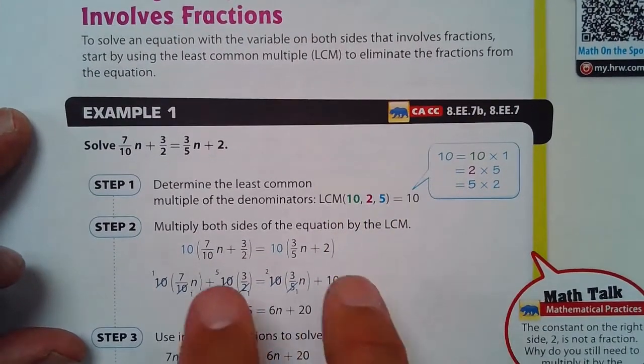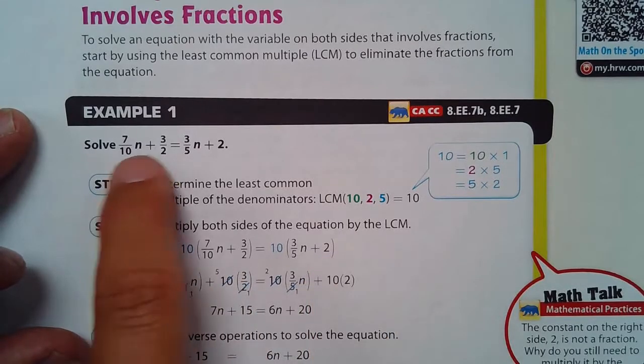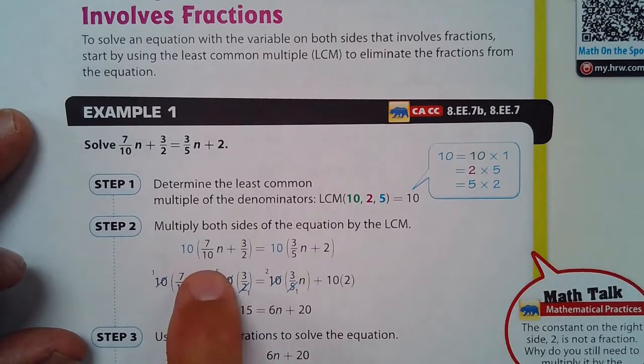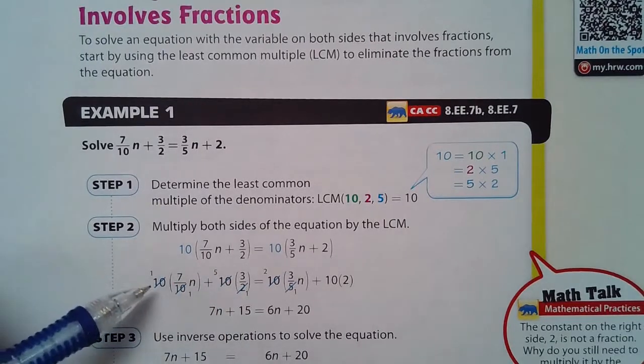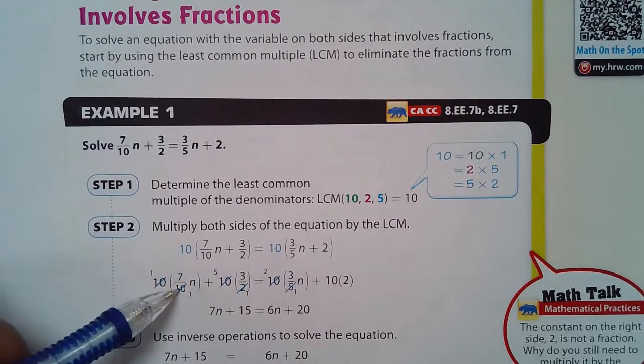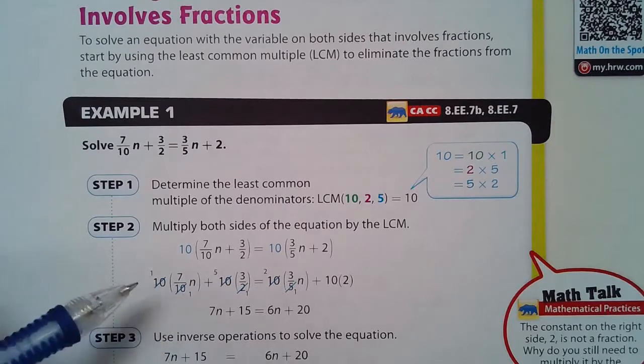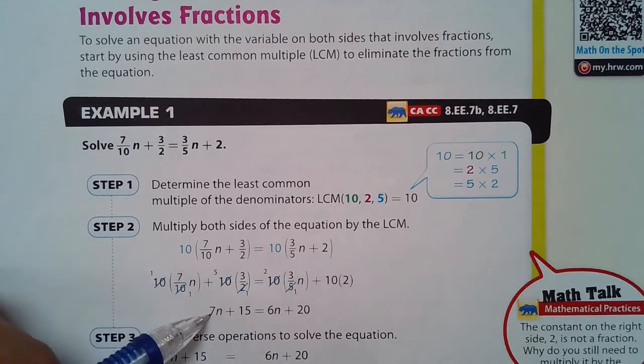So I multiply both sides by 10. I'm going to multiply that left side all by 10 and the right side all by 10. And we can cross cancel.